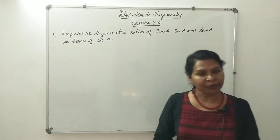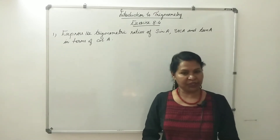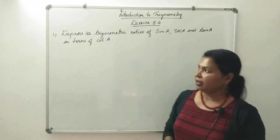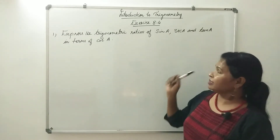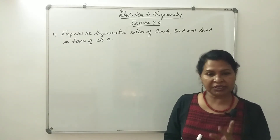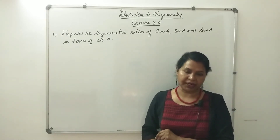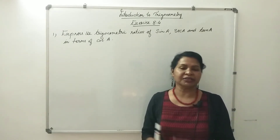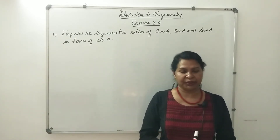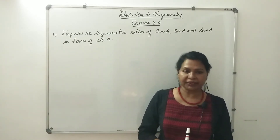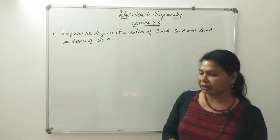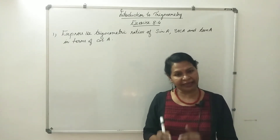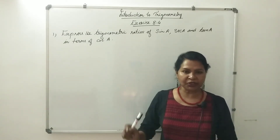For the introduction to trigonometry, in this chapter, we have a lot of questions. In exercise 8.4, I skipped the first two questions. I will do the last one, because we will make the trigonometric identities clear.